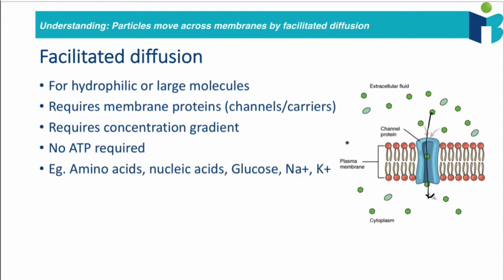That's why you need membrane proteins to move these solutes down their concentration gradient. Of course, as we already mentioned, this process does not require ATP. Examples of particles that will perform facilitated diffusion include amino acids, because these are polar and sometimes even charged, nucleic acids for the same reasons, glucose because it is a polar molecule, and then sodium and potassium because they are also charged.